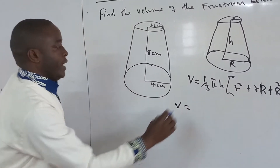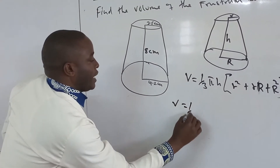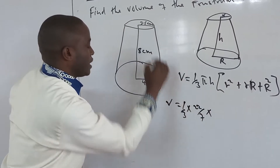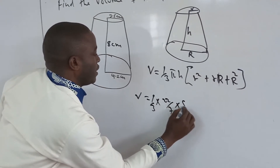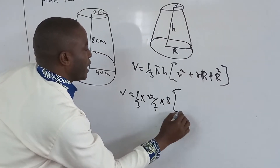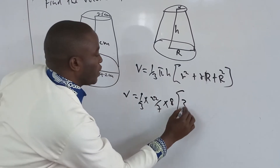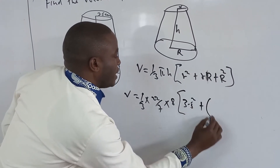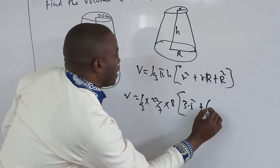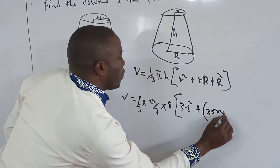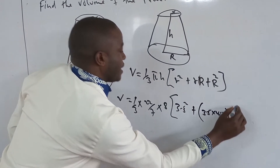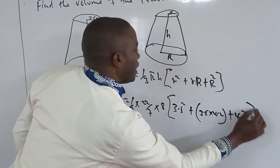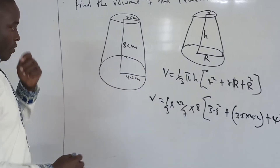So therefore, volume equals one-third times 22/7 times the height — in this case it is 8 — then in brackets: r squared, that is 3.5 squared, plus r·R, that is 3.5 times 4.2, plus R squared, which is 4.2 squared. This gives you the volume.